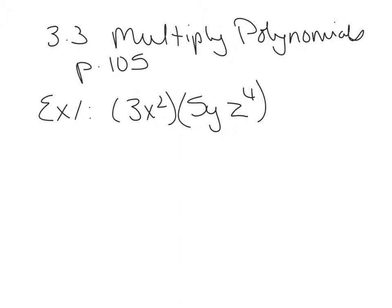To multiply a monomial times a monomial, you first multiply the coefficients. So 3 times 5 is 15. And then you multiply variables. We have an x squared here, and there are no x's over here, so we're just going to have x squared, and a y and a z to the 4th. We always list these variables in alphabetical order. So that is example 1, multiplying a monomial times a monomial.